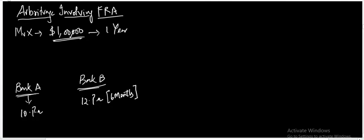Mr. X is considering both options. If he deposits into Bank A, the bank will pay him 10% interest for the whole year. In the other scenario, he goes to Bank B and deposits at 12%, but only for 6 months. After 6 months, the interest rates are going to change, and he is worried about what will happen to interest rates after that period. This is where the role of the FRA comes into play.